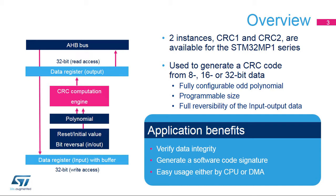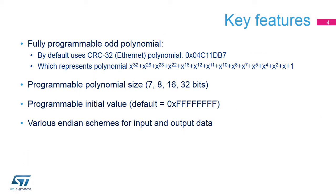Two instances, CRC1 and CRC2, are available for the STM32 MP1 series. The CRC calculation unit integrated in the STM32 features a fully programmable odd-value polynomial with a programmable size of 7, 8, 16, or 32 bits.